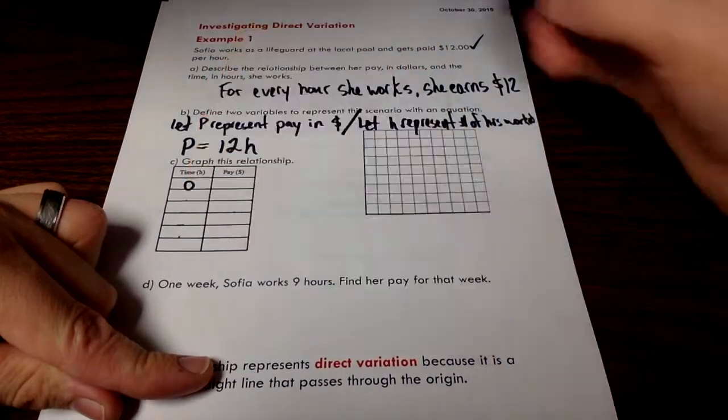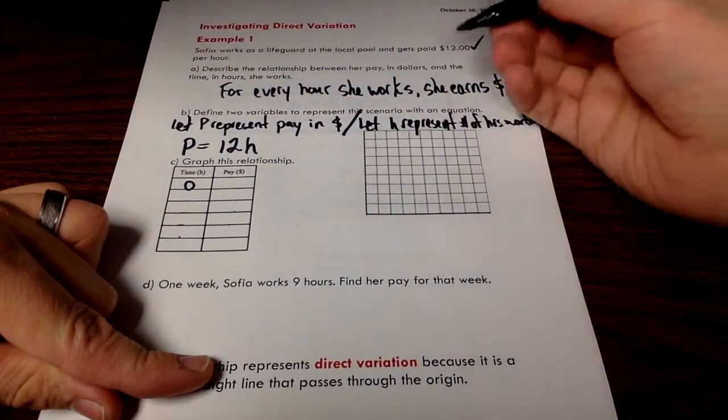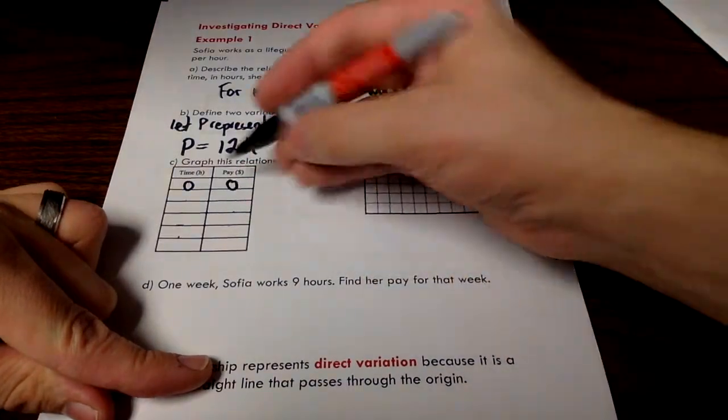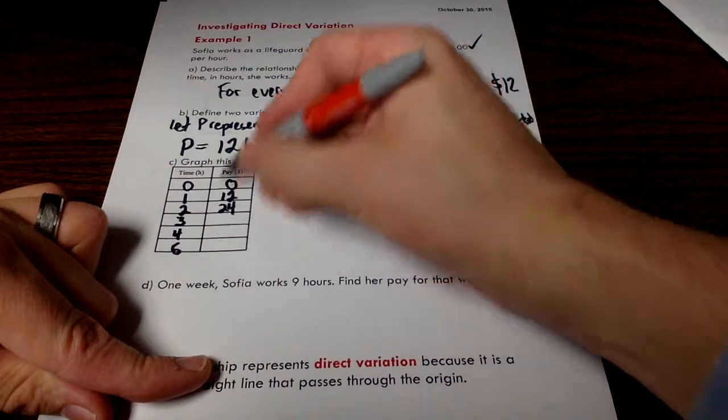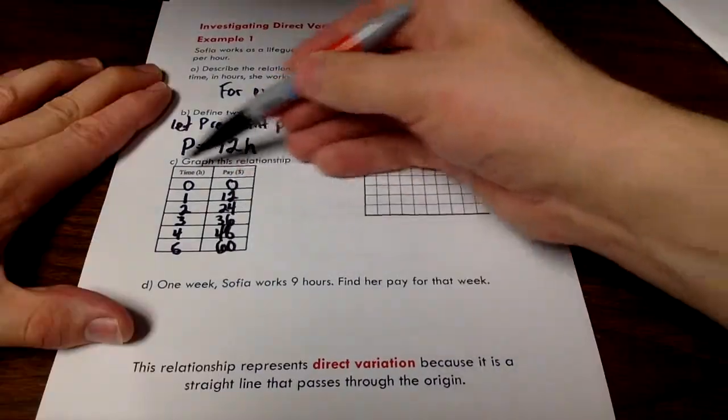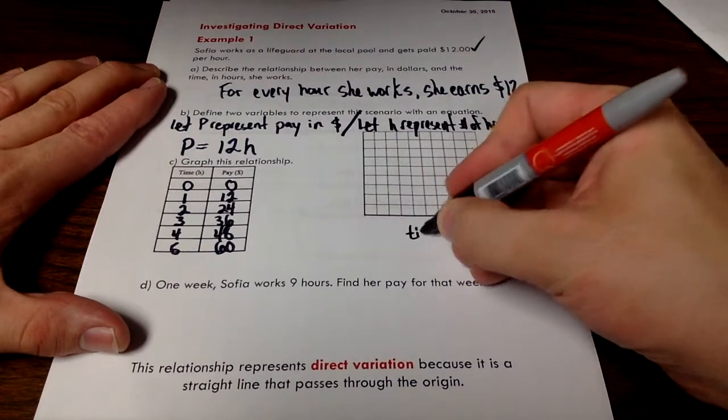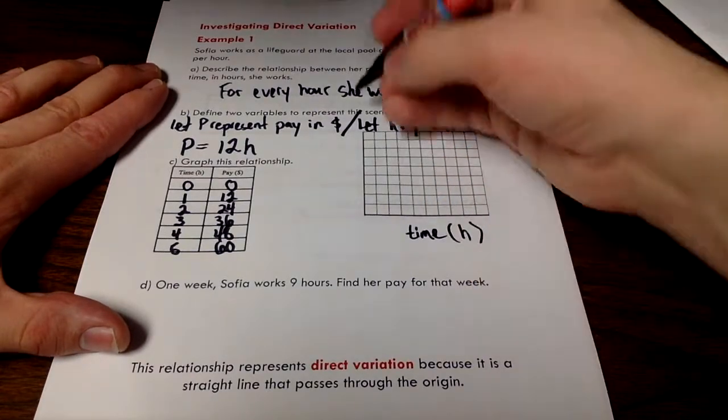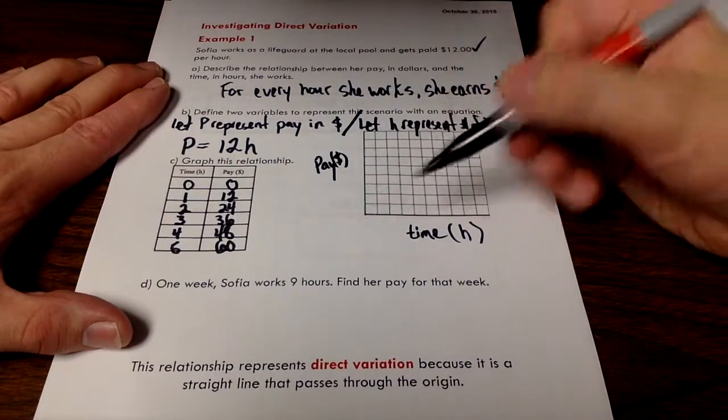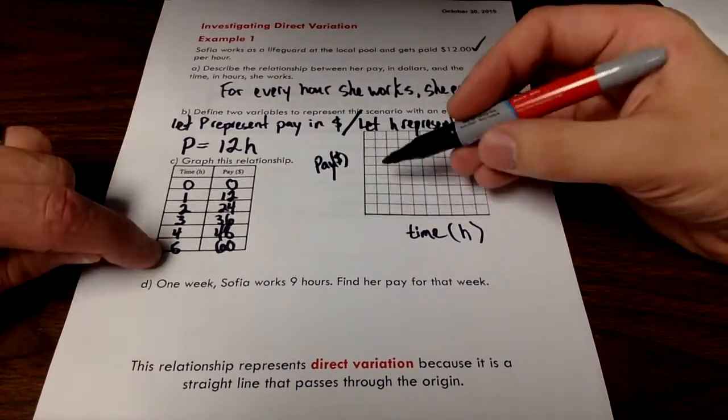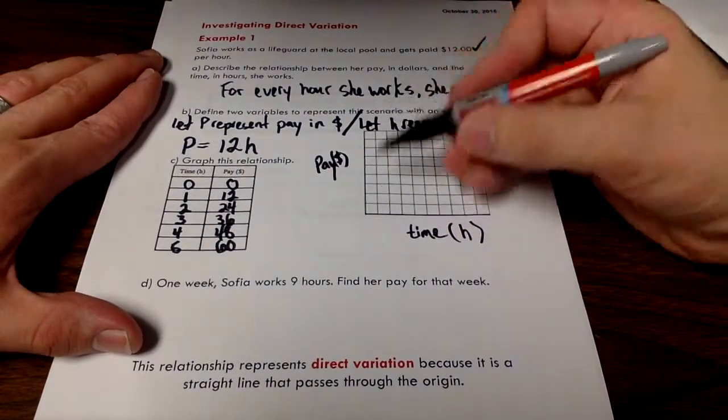Let's look at if time is zero. If this person does not work at all, if she doesn't work, she doesn't get paid. That's how I'm generating this table of values using this equation, increasing my number of hours and seeing what happens to my pay as a result. I want to plot these points on this graph. I've got time on the x-axis and pay on the y-axis. It's nice to come up with an appropriate scale here. Highest value is 60, so each one of these units is 10.